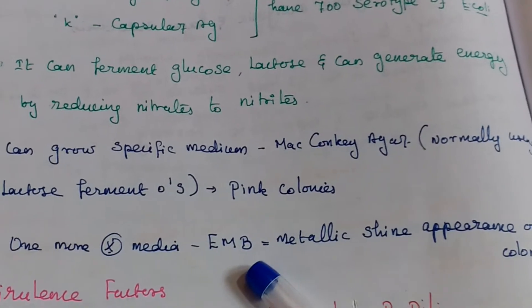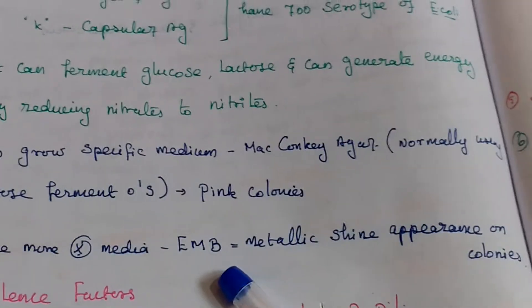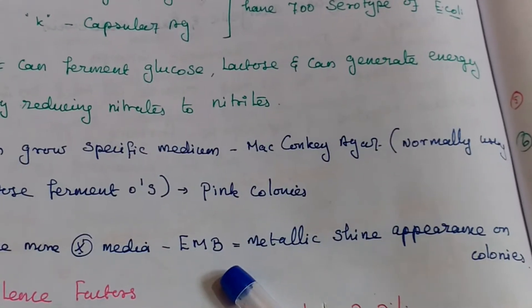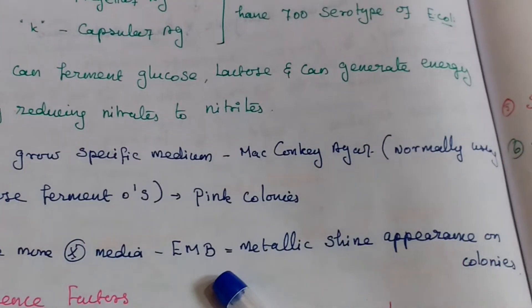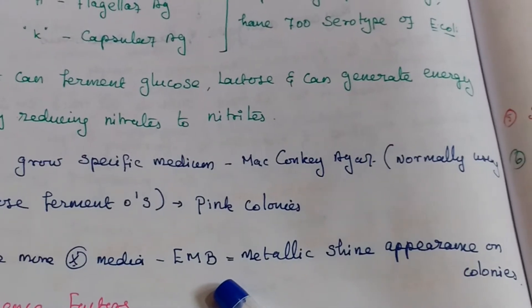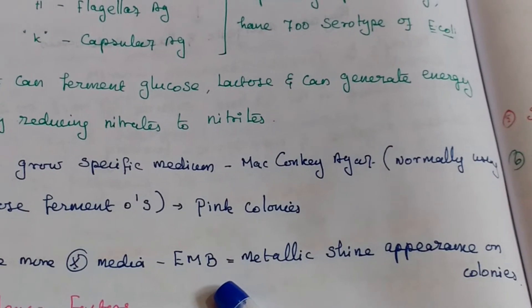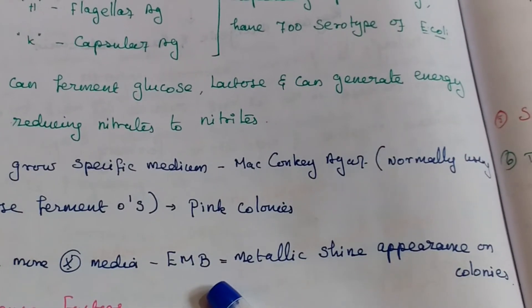One more important medium used is EMB — eosin methylene blue. It will produce a metallic shine appearance on colonies.